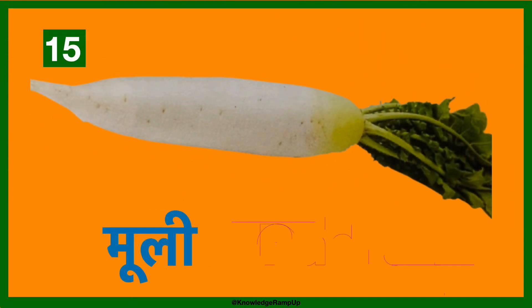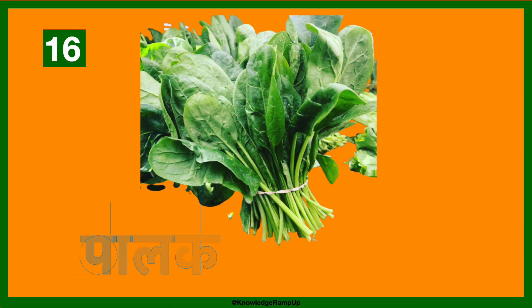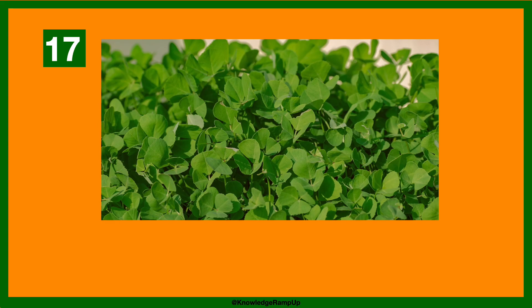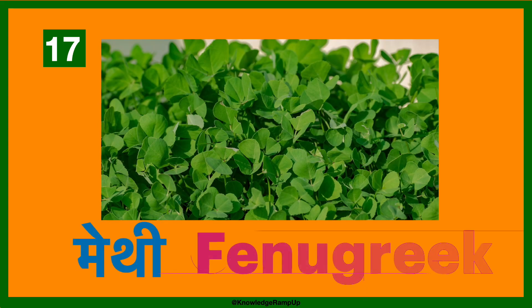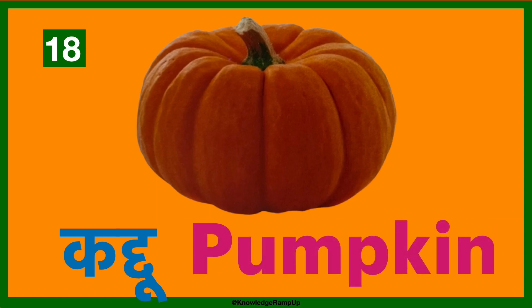Mooli — the English name is radish. Palak — the English name is spinach. Methi — it's called fenugreek in English. Kaddu — this is pumpkin in English.